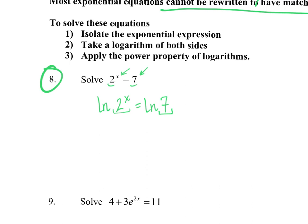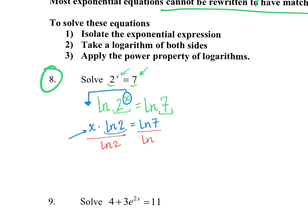The reason we want to take the natural log is because of the log property: if our argument has a power on it, we can bring that to the front. That allows us to have our x value on the normal line. Now natural log of seven and natural log of two are just numbers — the only variable here is x. So if I want x's coefficient to go away, just like having a two next to x, I'll divide by natural log of two on both sides. Those cancel out, and we are left with x equals natural log of seven divided by natural log of two. This is the exact answer.